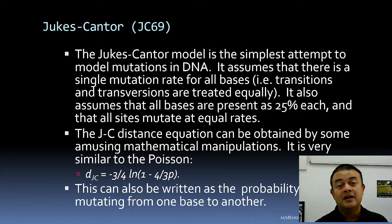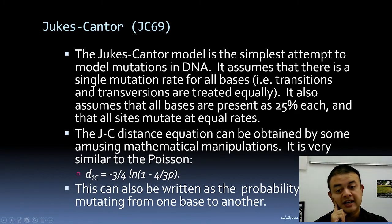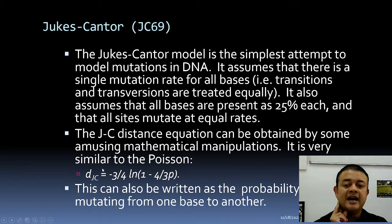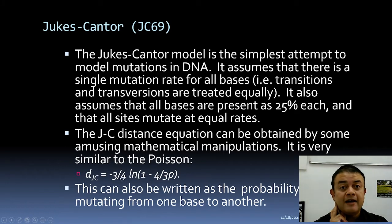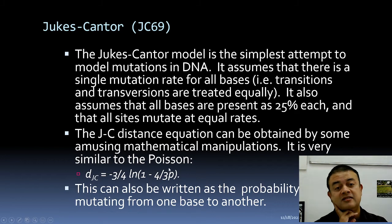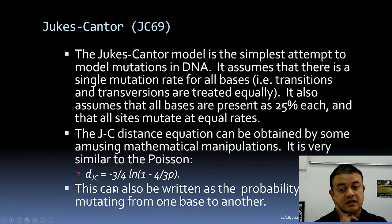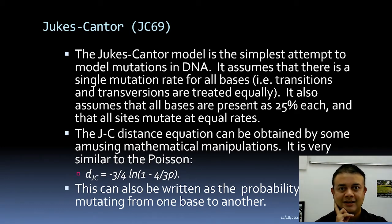The JC distance equation is obtained by mathematical manipulations from the Poisson equation. The Poisson equation is d = −ln(1 − p). The JC69 equation adds two factors: d = −(3/4) ln(1 − (4/3)p). The only difference from the Poisson equation is the 3/4 and 4/3 factors, accommodating multiple substitutions.